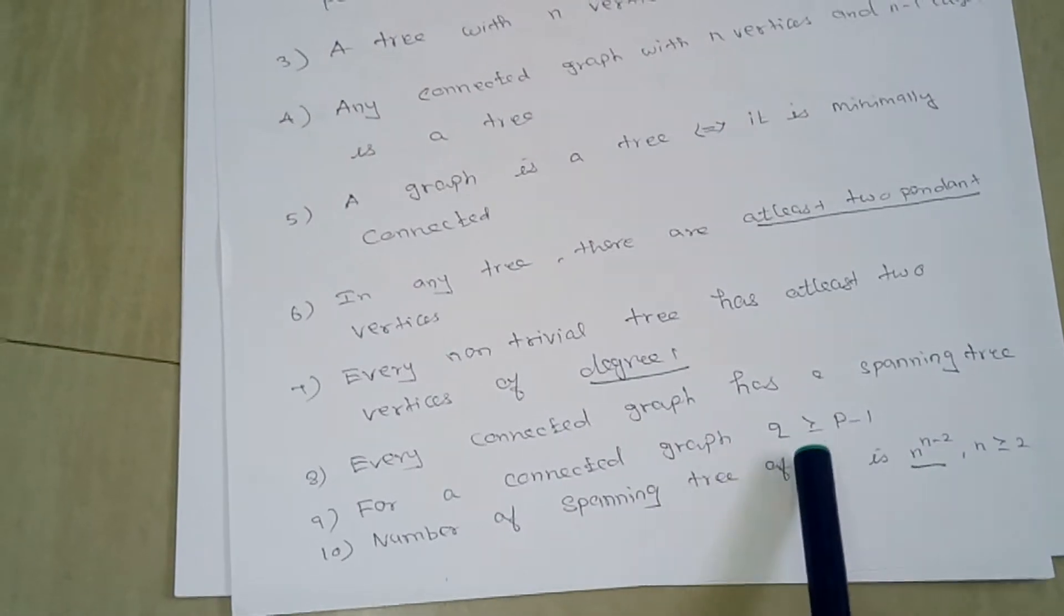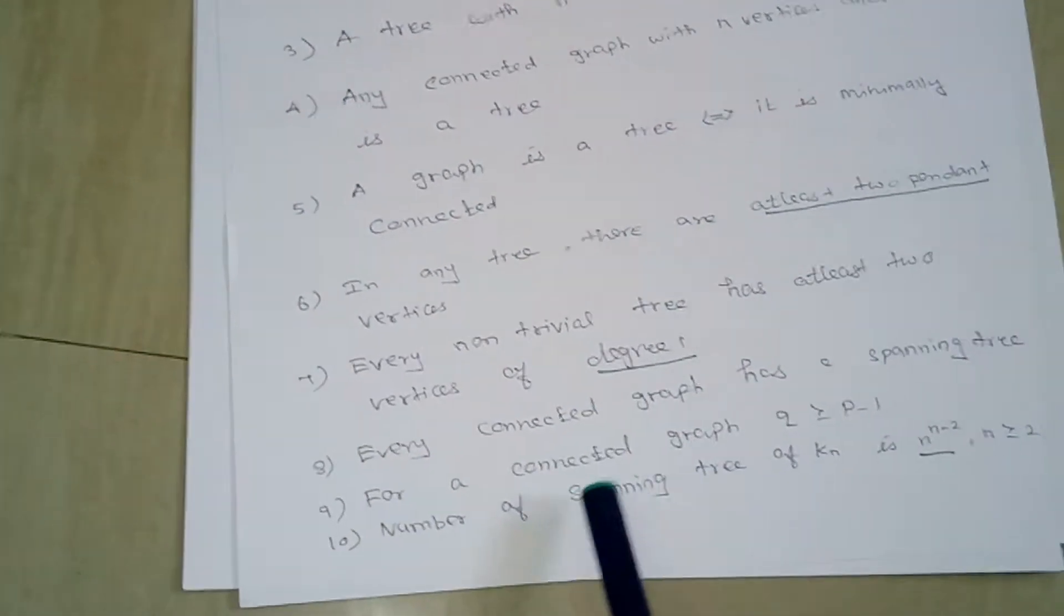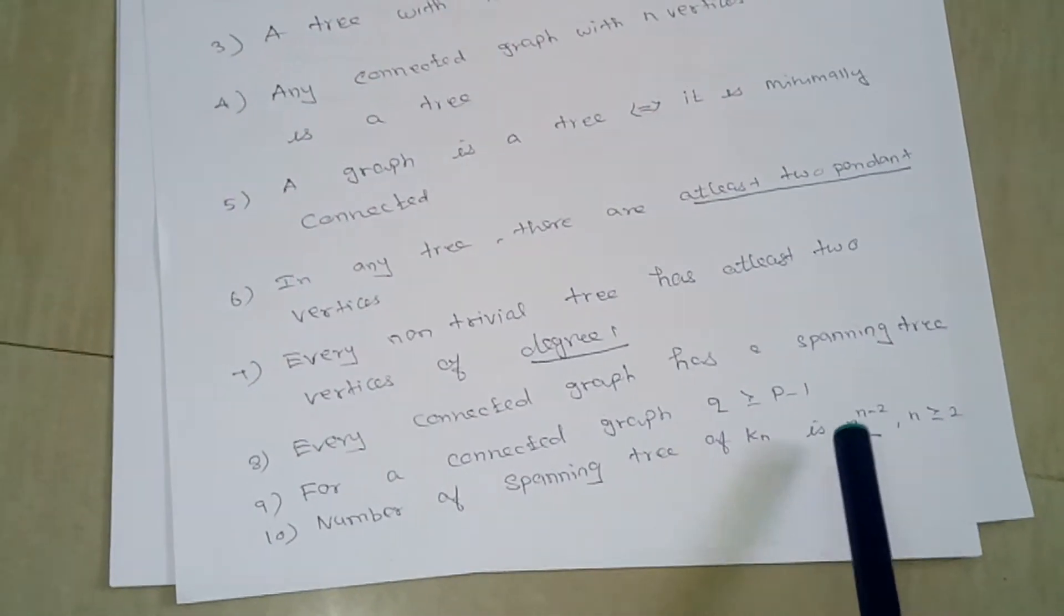For a connected graph, q greater than or equal to p minus 1. Number of spanning trees of Kn is n to the power n minus 2, where n is greater than or equal to 2.